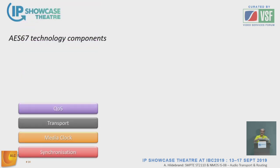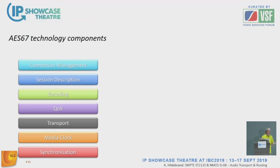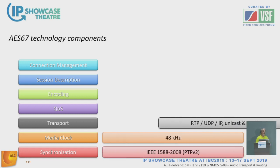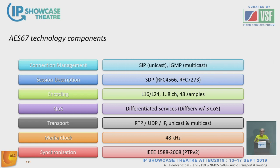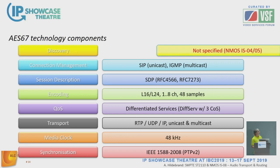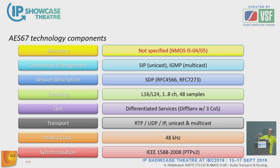AES 67 has a number of technology components. If you're already familiar with ST 2110, you'll recognize that the lineup of AES 67 definitions is essentially the same as in the dash-10 document. We have synchronization, media clocks, transport QoS, encoding, stream description, and stream connection — with a set of mandatory requirements. Discovery was deliberately left out of the definition because there are so many different discovery schemes available. The ST 2110 people followed the same approach — you won't find any discovery mechanism in ST 2110 either.